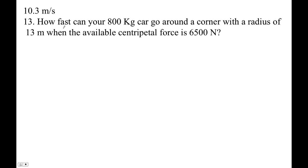All right, another one. Notice that it's asking us how fast, so we're going to use this guy. And we're solving for V, right? So let's just plug in the numbers: 6500 is equal to 800—this is a very lightweight car—times V squared. We don't know V, right? And then 13 meters.